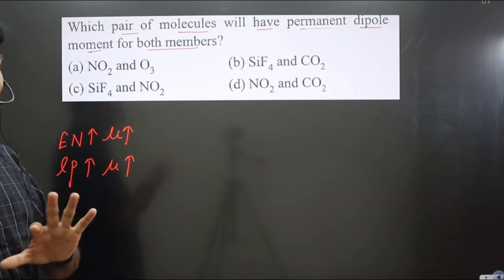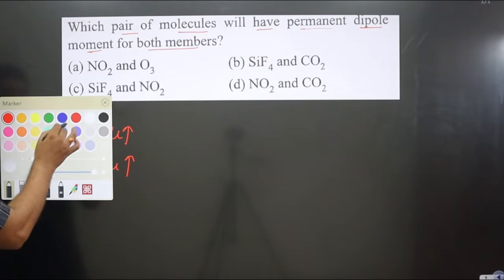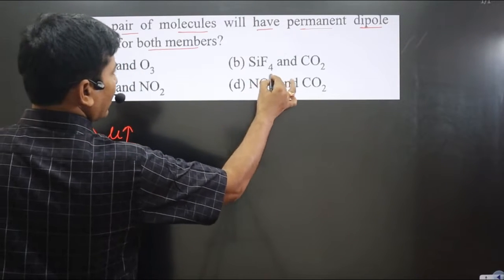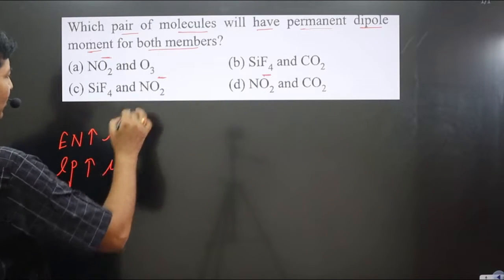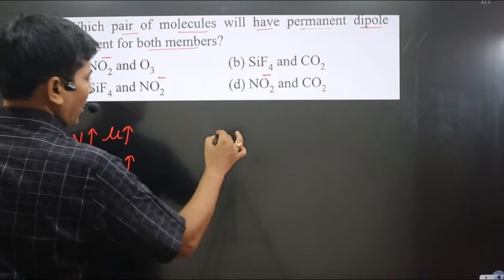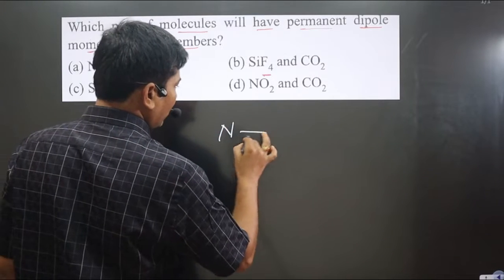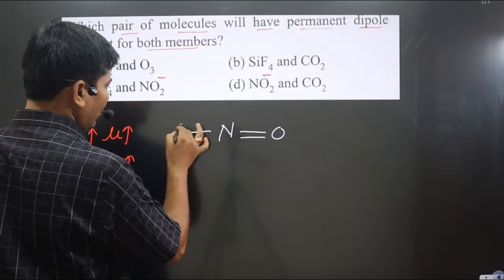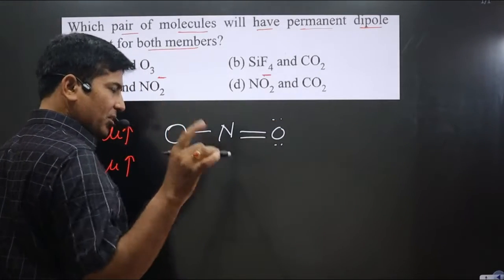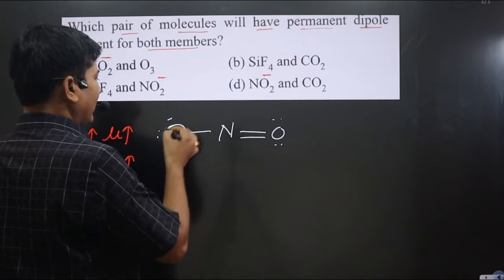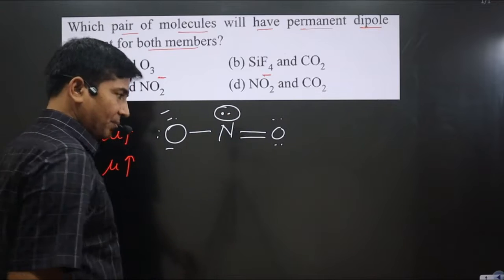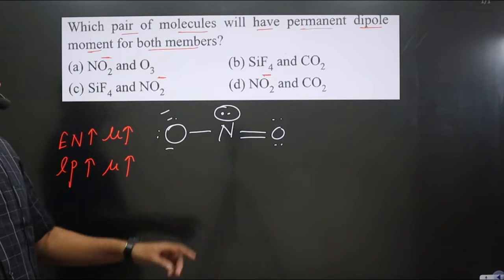Based on these facts, we can answer this question. For NO₂⁻, it carries one negative charge. If we draw the structure of NO₂⁻, we have nitrogen forming a double bond with one oxygen and a single bond with another oxygen. The oxygen forming the double bond has two lone pairs, and the oxygen forming the single bond has one lone pair. The ion carries one negative charge.